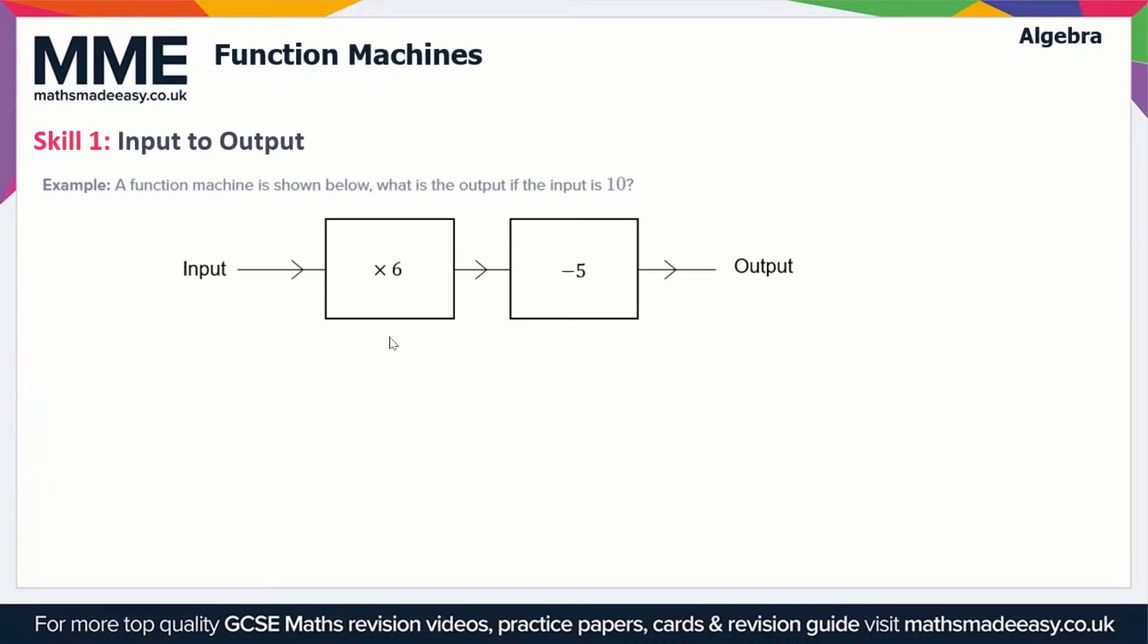We're going from left to right here. The first thing we do is multiply by 6, so 10 times 6 equals 60. This is the first operation. The second operation is we subtract 5, so 60 minus 5 equals 55. So our output is 55.